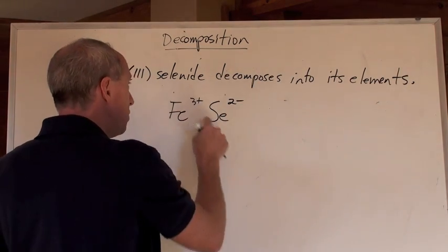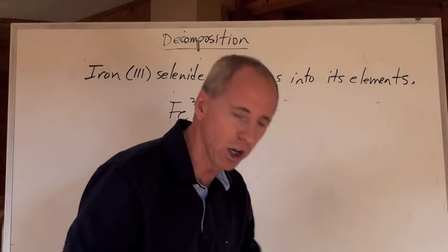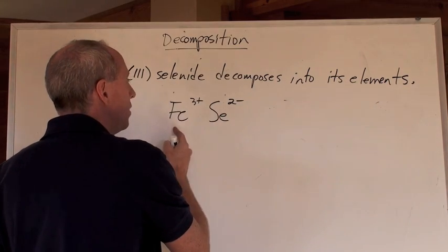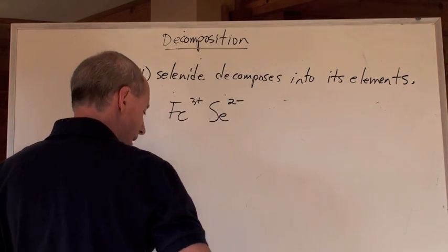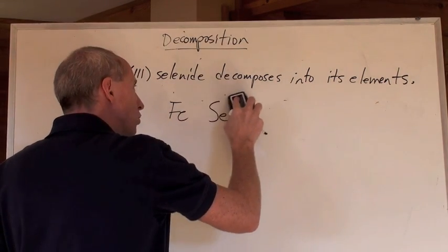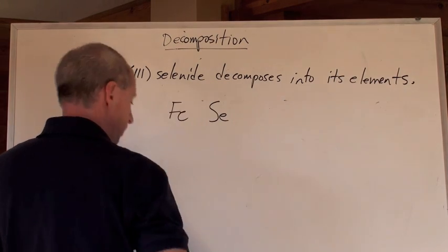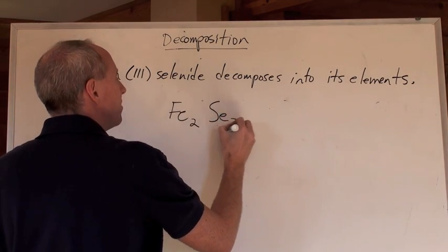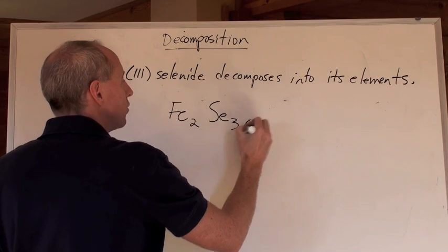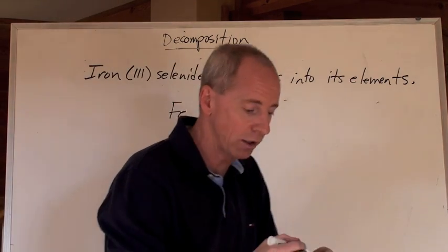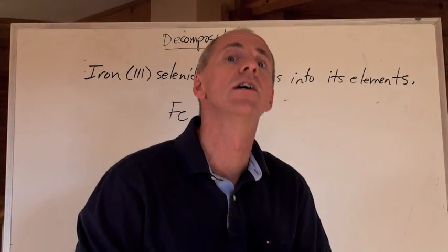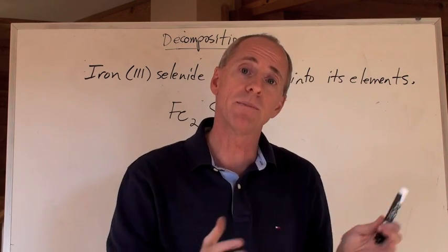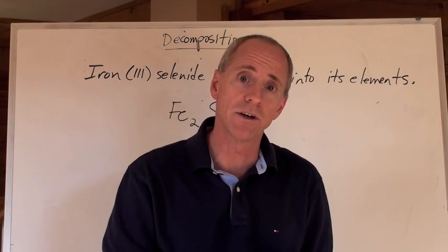How do you put those two together? Switch the charges. You need two of these to react with three of these, so don't leave those charges lying around. You're going to get Fe₂Se₃. It's a solid — you weren't told it was a solid, but all ionic compounds are solid at room temperature. When put into water they become aqueous, but not yet.